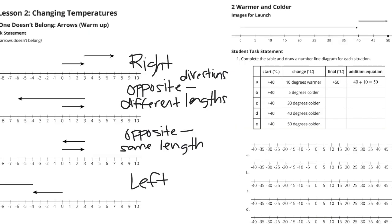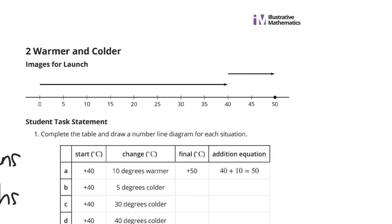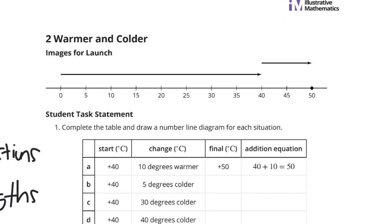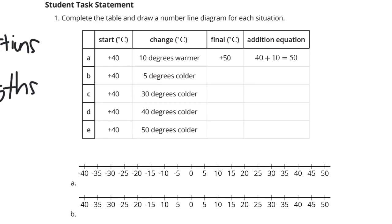Let's look at question 2. If we look for the images for launch here, we could write this question on the number line as 40 plus 10 is equal to 50. As you can see, this number line represents a positive 40, going from 0 up to 40. And then we're adding 10 more here to get to 50. So, 40 plus 10 is equal to 50. Now, as we look at these task statements, complete the table and draw a number line diagram for each situation.